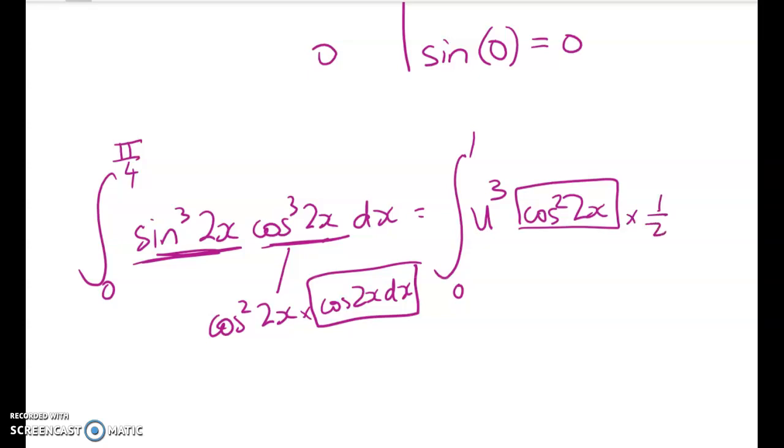So cos squared of 2x is equal to 1 minus sine squared of 2x. We've got u is equal to sine of 2x. This is my problem thing here. But this is cos squared of 2x.